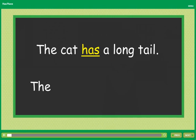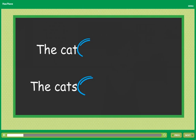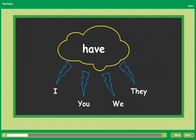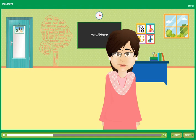Today we will learn about has and have. We always use have with these words. For example: I have a white chalk, you have short hair, we have done our work, they have not done their work. We also use have when we are talking about more than one thing or person.